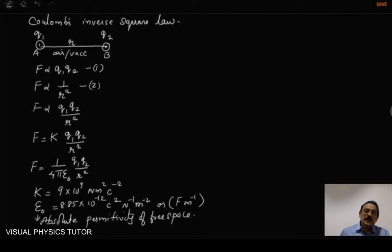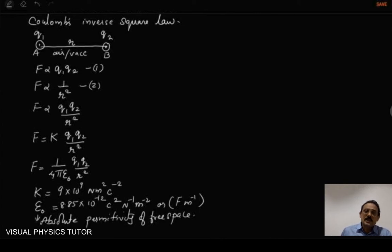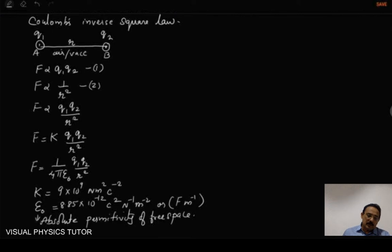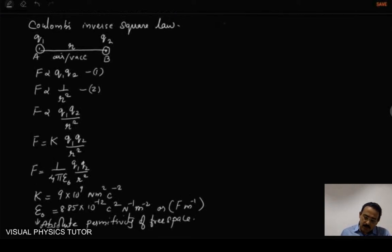For board exams you can expect a question: state Coulomb's inverse square law. The answer is that this law states that the electrostatic force existing between two electric charges is directly proportional to the product of the charges and inversely proportional to the square of the distance separating them. Now suppose Q1 is equal to 1 and Q2 is equal to 1.